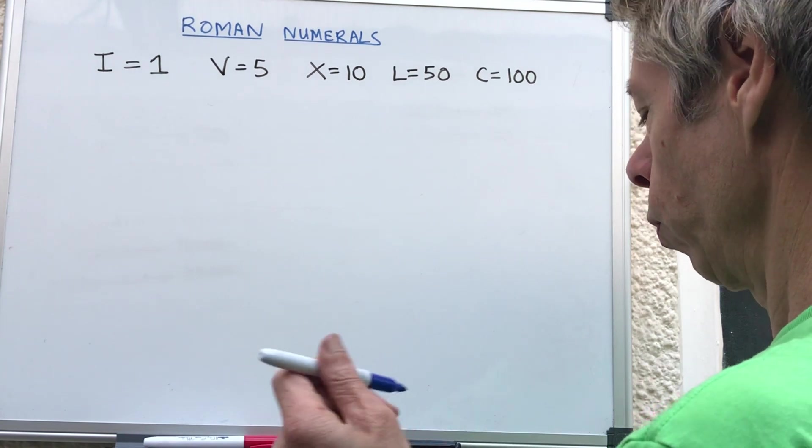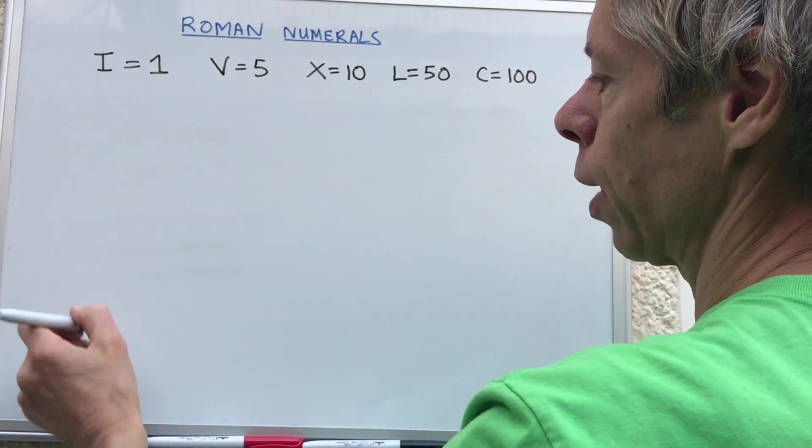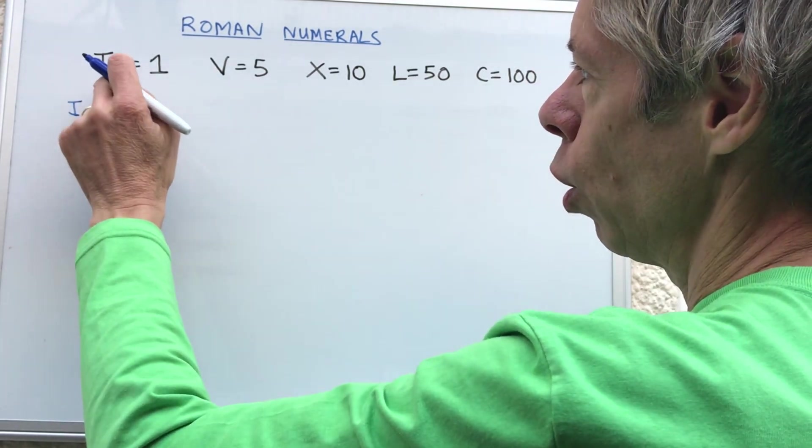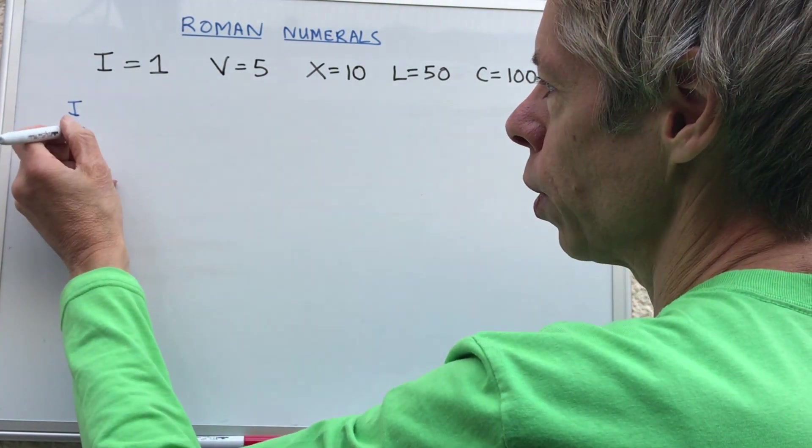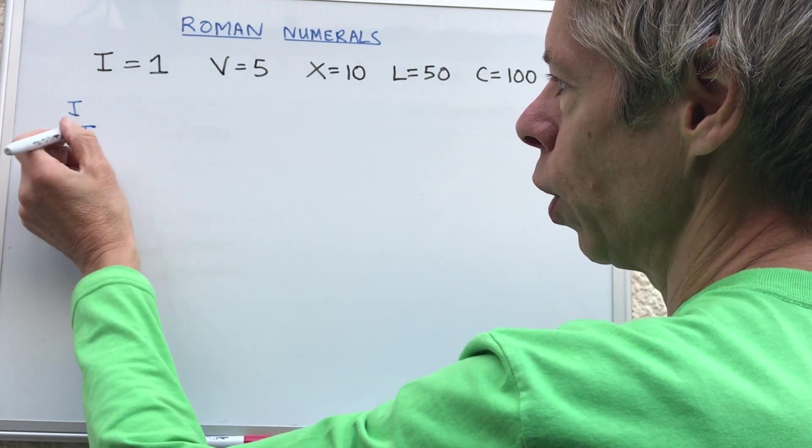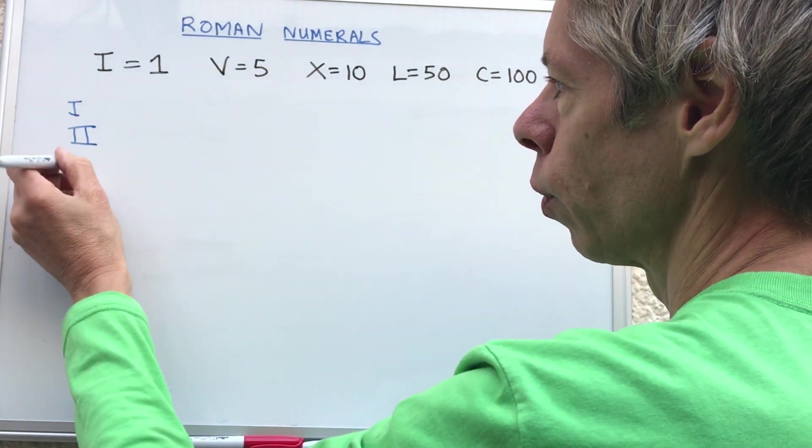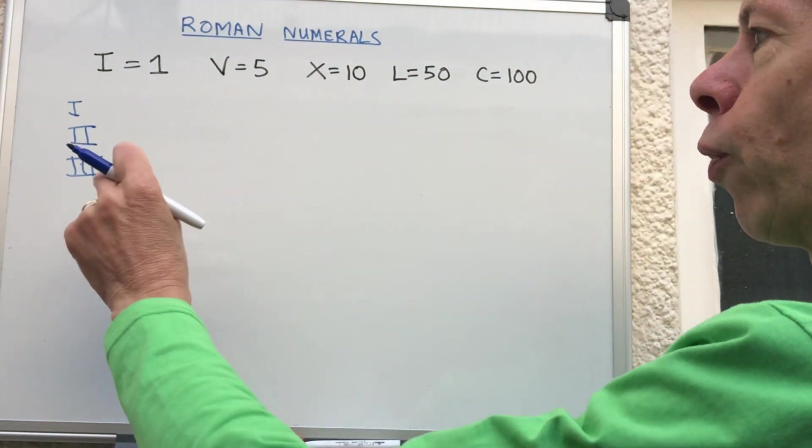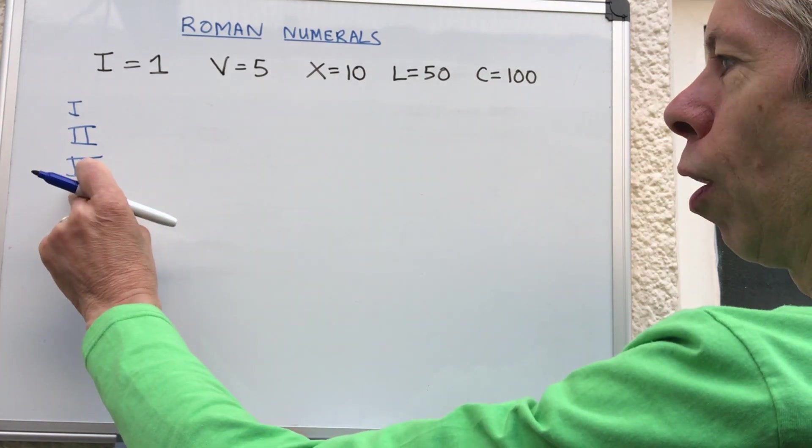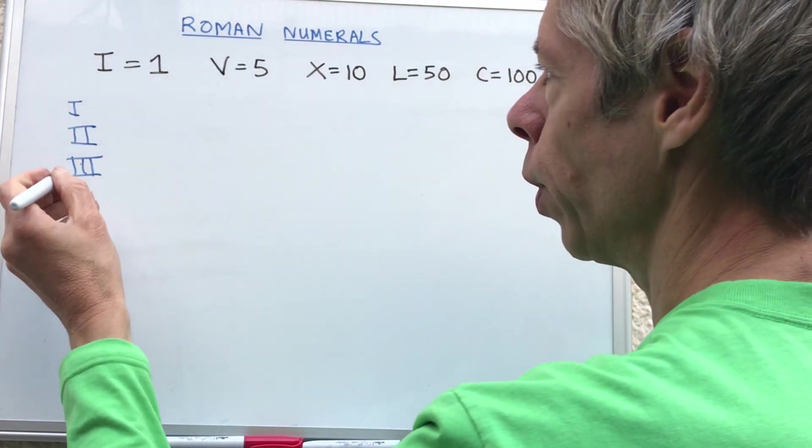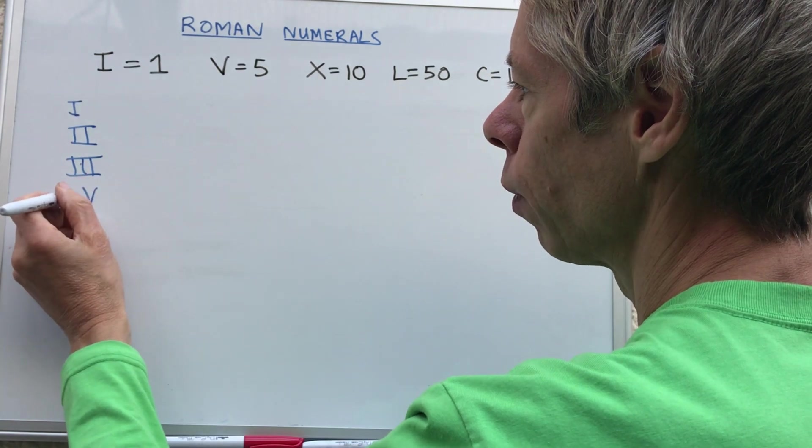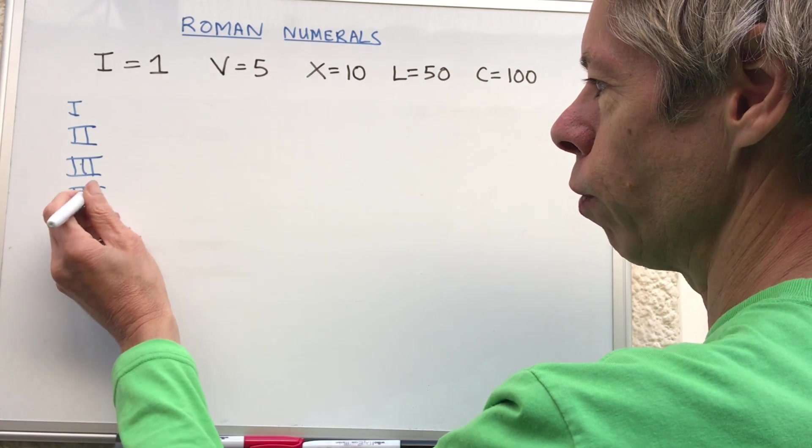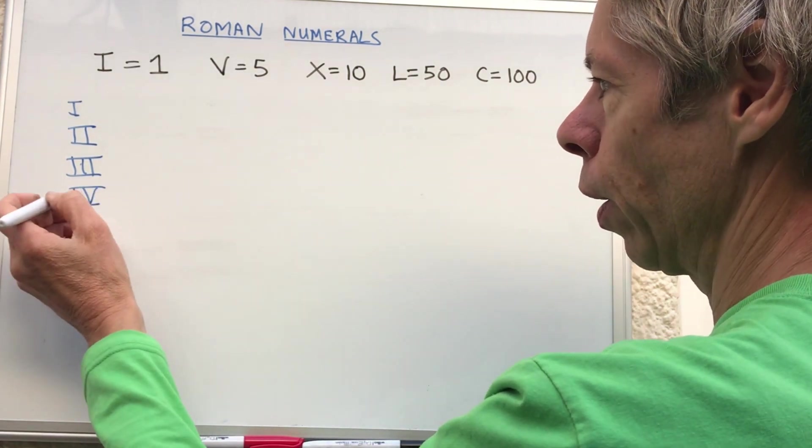Let's write down the first few numbers, 1 to 10. One is just I. If you want to do two, you normally join them together like that - II. That's three - III. When you get to four with Roman numerals you never have more than three symbols together, so what we do is go to five and then take away one.